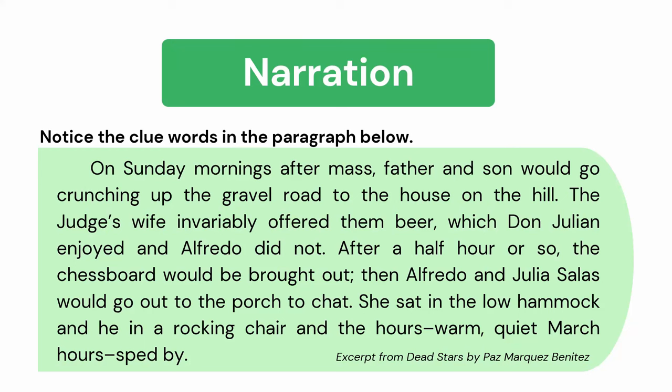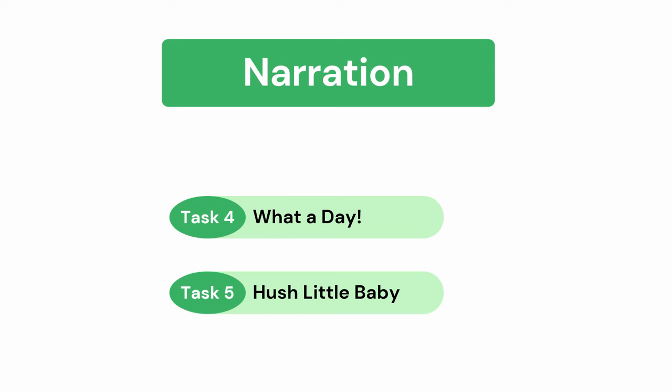Notice the clue words in the paragraph below: On Sunday mornings after mass, father and son would go out to the house on the hill. The judge's wife invariably offered them beer, which Don Julian enjoyed and Alfredo did not. After half an hour or so, the chessboard would be brought out. Then Alfredo and Julia Salas would go out to the porch to chat. She sat in the low hammock and he in a rocking chair, and the hours — warm, quiet March hours — sped by. This is an excerpt from Dead Stars by Paz Marquez Benitez. For narration, you need to answer Task 4, What a Day, and Task 5, Hush Little Baby.